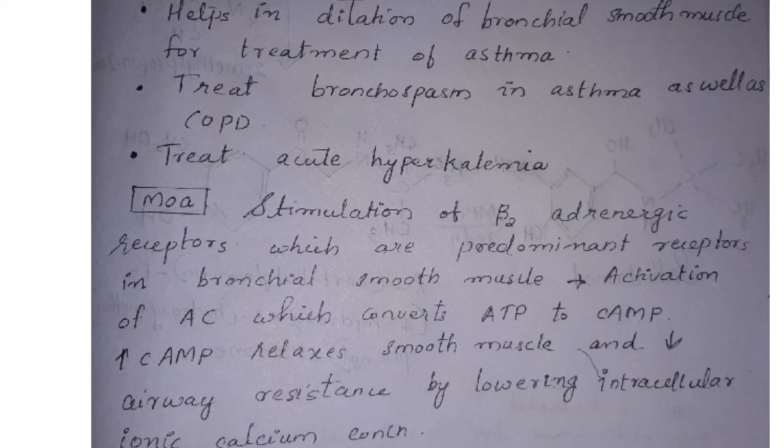The stimulation of beta-2 adrenergic receptors, which are predominant receptors in bronchial smooth muscle, leads to the activation of adenyl cyclase, which converts ATP into cAMP — cyclic adenosyl monophosphate — that is a secondary messenger. The increase in concentration of cAMP relaxes smooth muscle and decreases the airway resistance by lowering intracellular ionic calcium concentration. This is how salbutamol acts on the bronchial smooth muscles.